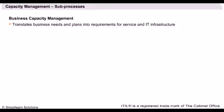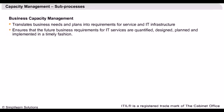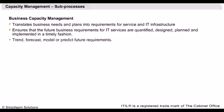Business Capacity Management translates business needs and plans into requirements for service and IT infrastructure, ensuring that the future business requirements for IT services are quantified, designed, planned and implemented in a timely fashion. This can be achieved by using the existing data on the current resource utilization by the various services and resources.